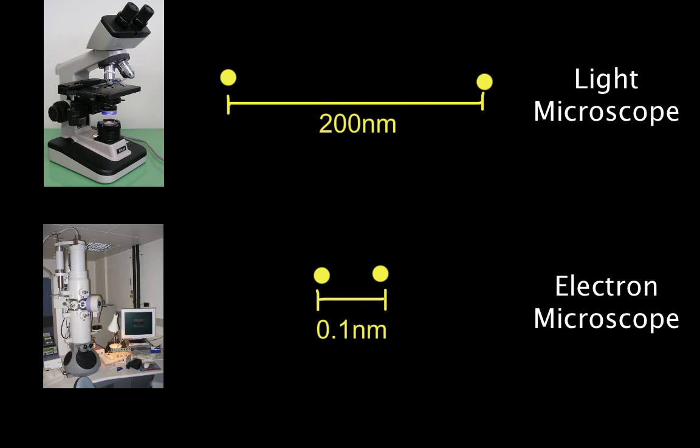So for us as biologists, this means that if we use a light microscope, we can view cells, but we can't view organelles because the organelles are too small.